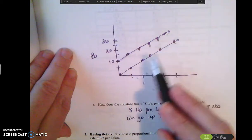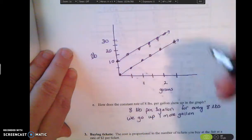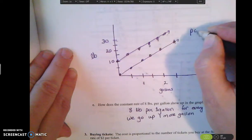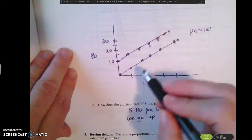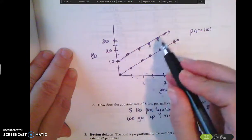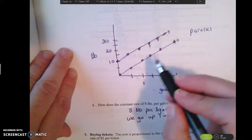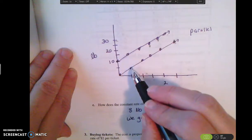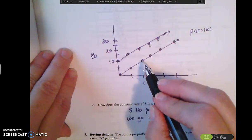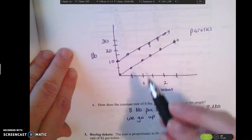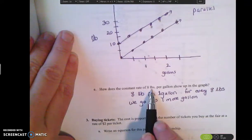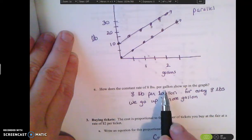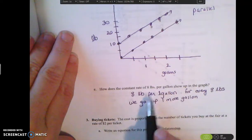So both of these graphs look linear. And if you'll notice they also look parallel to each other. So parallel means they don't touch. So these two lines look linear, they look parallel to each other. There is a constant change from this point to this point, from this point to this point. And so what they're talking about here is what is the constant rate of 8 pounds in this graph? How does it show up in the graph?